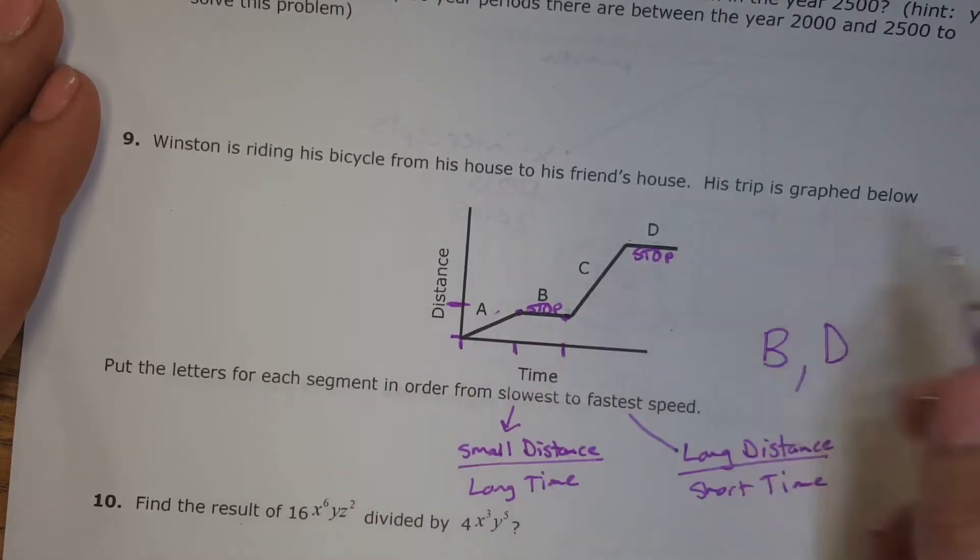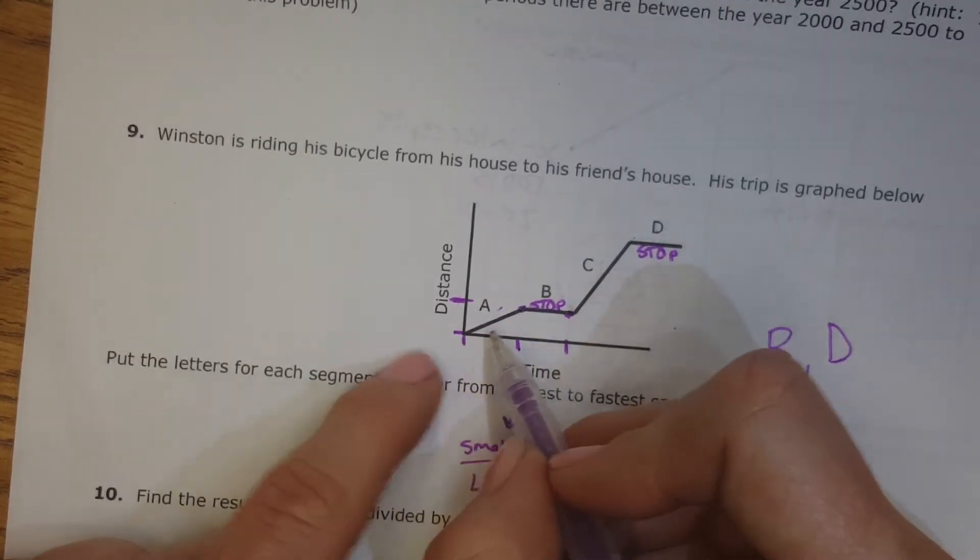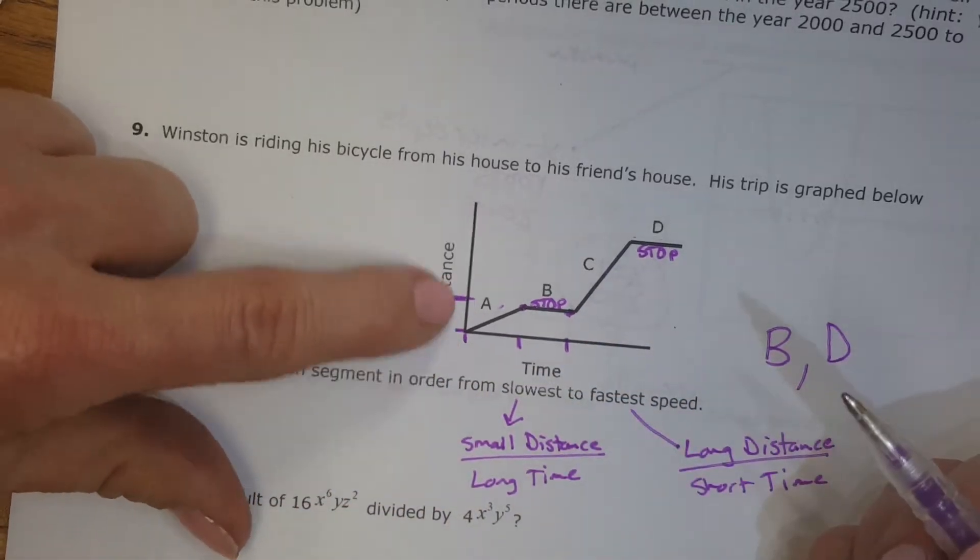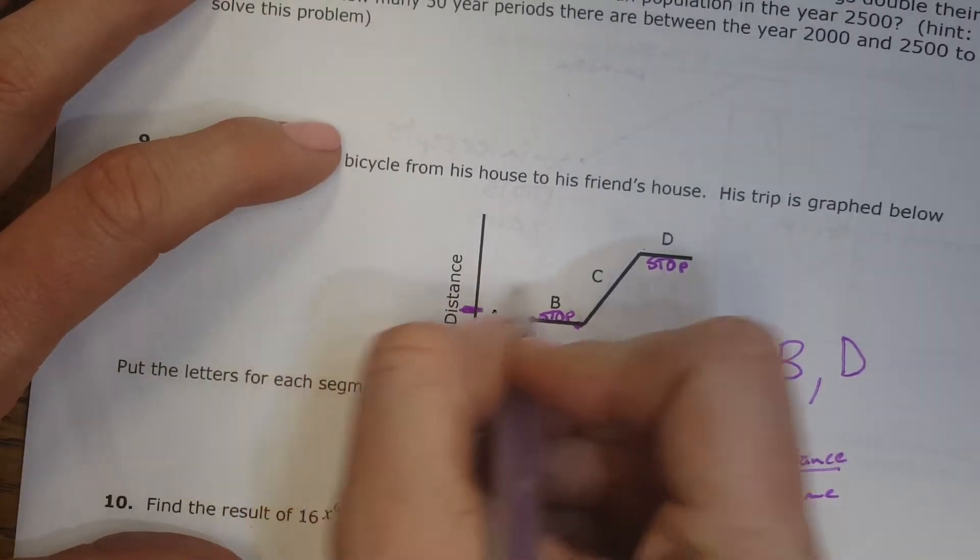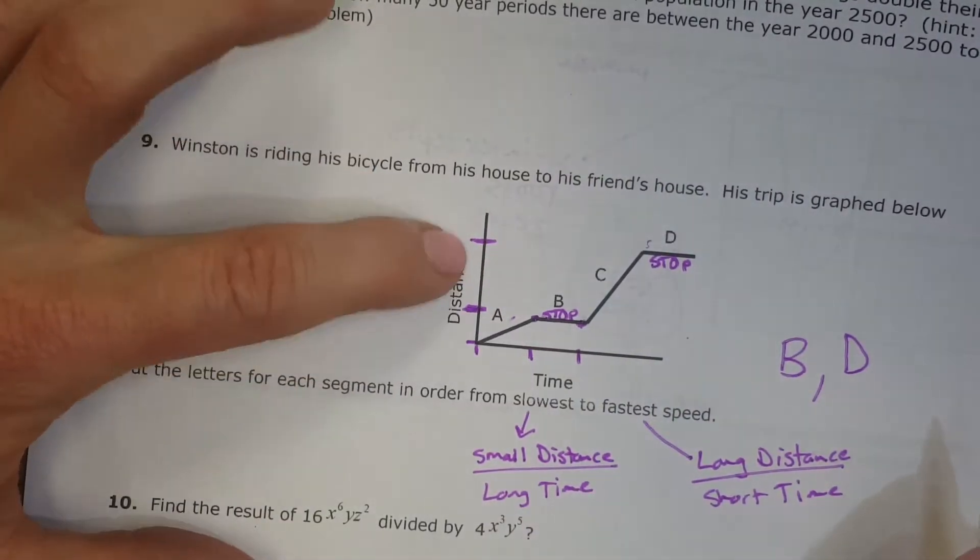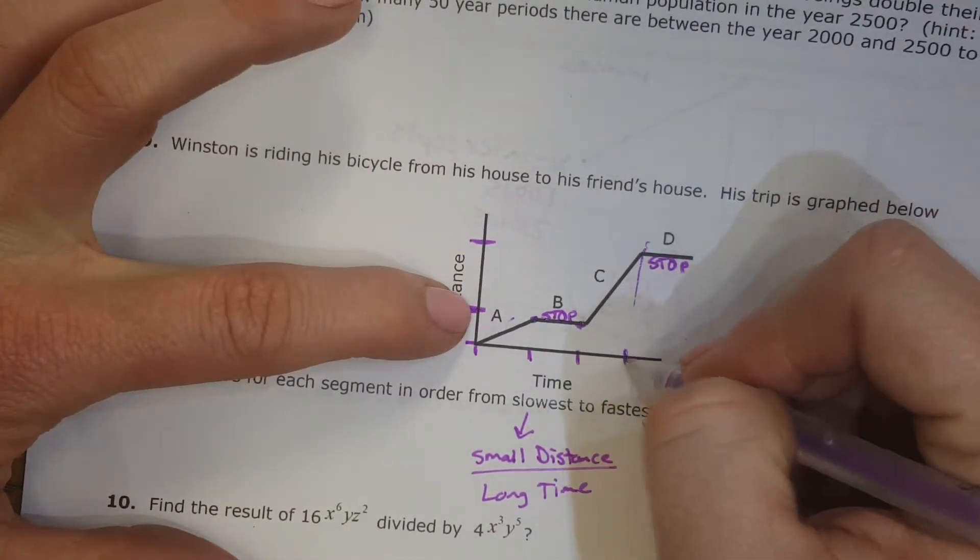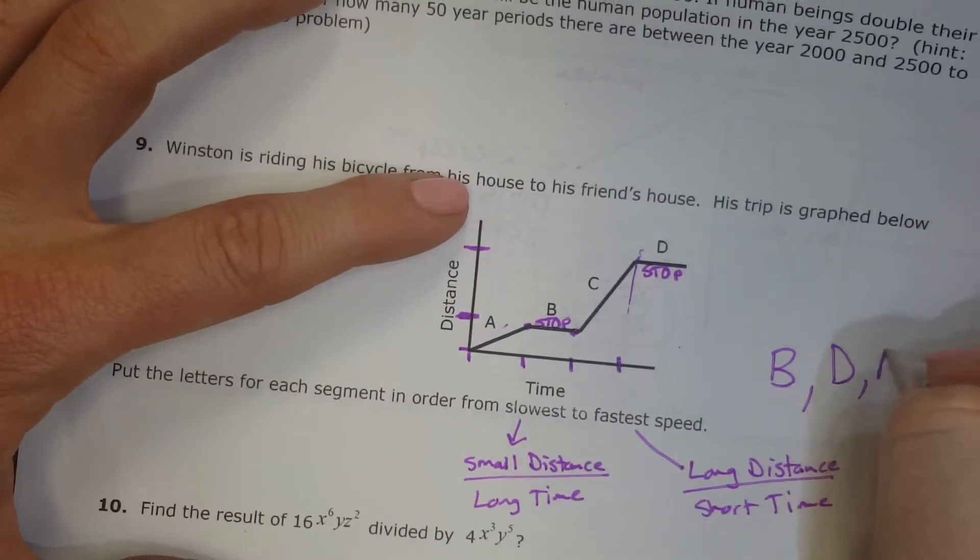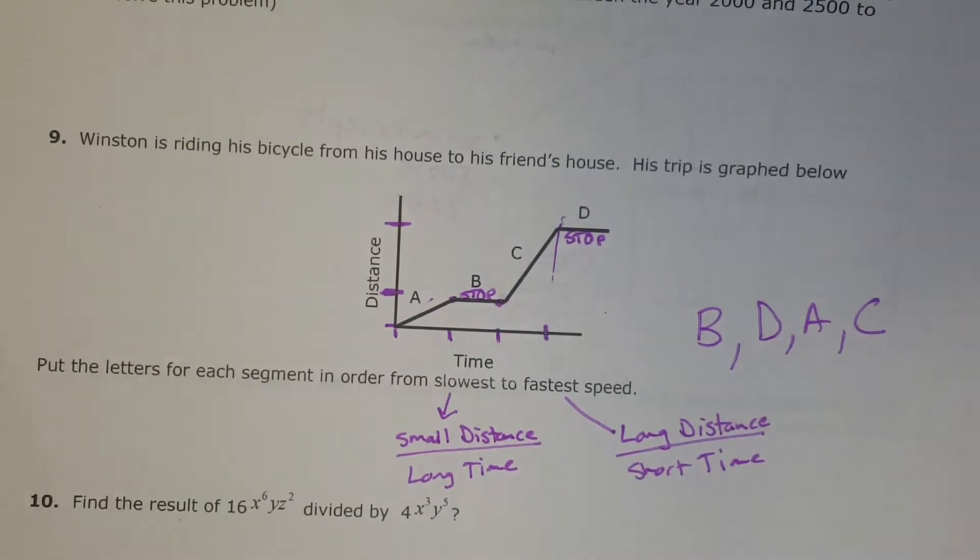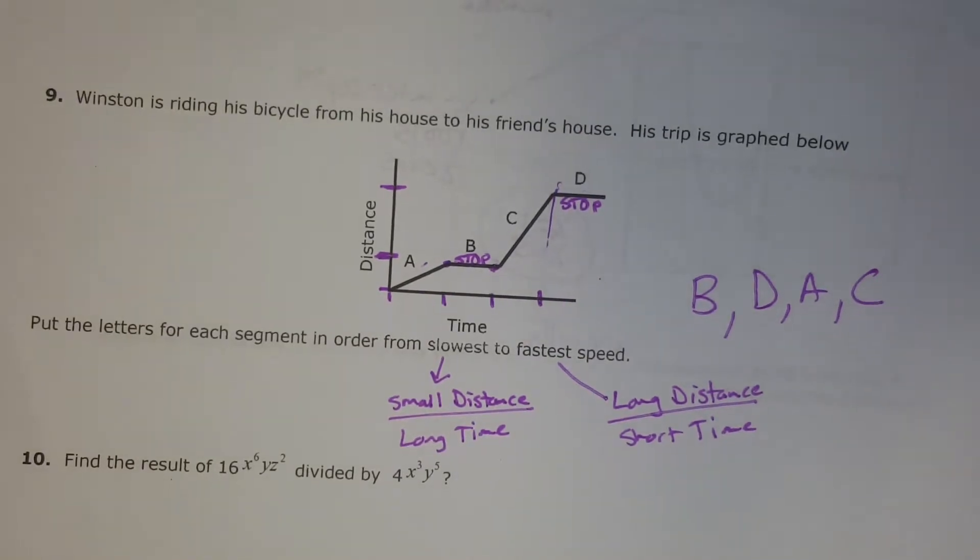Then A is slower than C, because A is a shorter distance in a longer time. And you can see for C, it's from here to here. That's a bigger distance in, looks like the same amount of time. So A, and then C is the fastest.